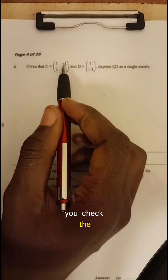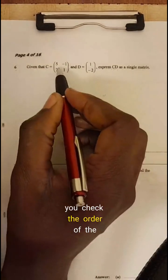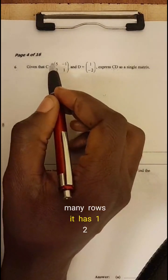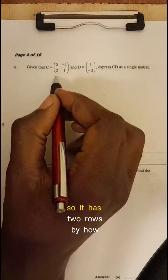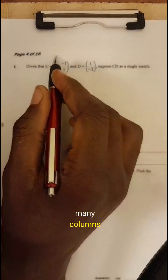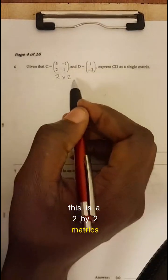You check the order of the first matrix. First of all, you check the order of the first matrix. So this matrix has how many rows? It has one, two. So it has two rows by how many columns? One, two, two columns. So this is a two by two matrix.